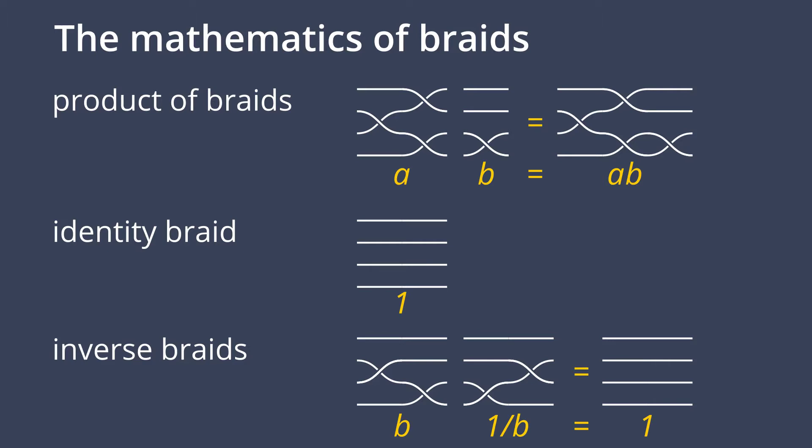To summarize, braids can be represented by diagrams of horizontal strands with over and under crossings, and their main mathematical features are the product of braids given by joining braid diagrams, the identity braid with no crossings, and the operation of forming inverse braids. Using the idea that the strands are flexible, each braid B can be disentangled to the identity braid 1 by multiplication with its inverse braid 1 over B.